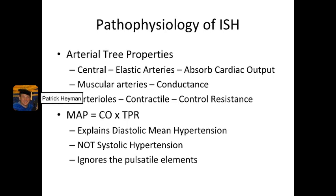In school, you probably learned that mean arterial pressure comes from cardiac output times total peripheral resistance. This equation explains diastolic and mean hypertension. However, it doesn't explain systolic hypertension, and it also ignores the pulsatile elements of blood pressure.